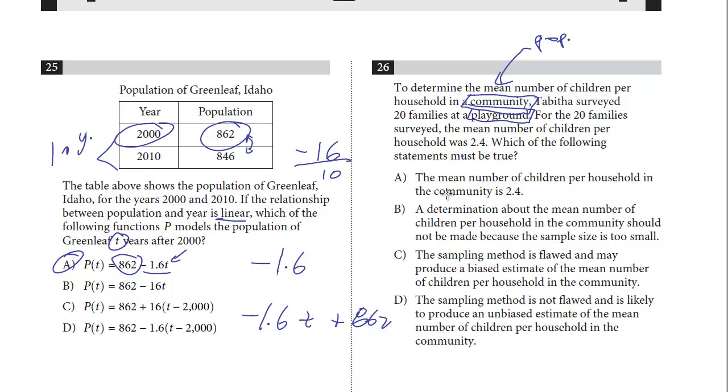So let's take a look at the choices. The mean number of children per household in the community is 2.4. No, because this is not an accurate, random sample. They're asking at a very specific place, which I think would definitely skew the observation. A determination about the mean number of children per household in the community should not be made because the sample size is too small. 20 families is not necessarily too small. It's really just the venue, where they ask these families. That doesn't make it random.